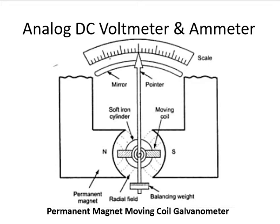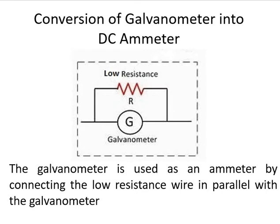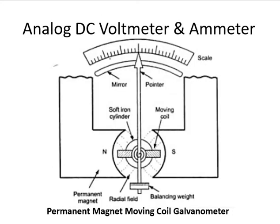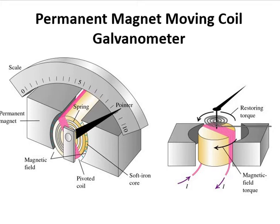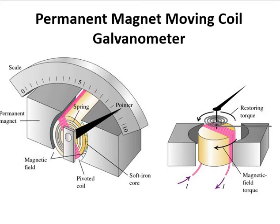This galvanometer is used to make a DC ammeter or DC voltmeter. Now we deal with the conversion of the galvanometer into a DC ammeter. To convert the galvanometer into a DC ammeter, we connect a low resistance in parallel with the galvanometer. This combination gives you a DC ammeter. The capital G represents the galvanometer, and this 3D diagram shows exactly how the PMMC galvanometer works.